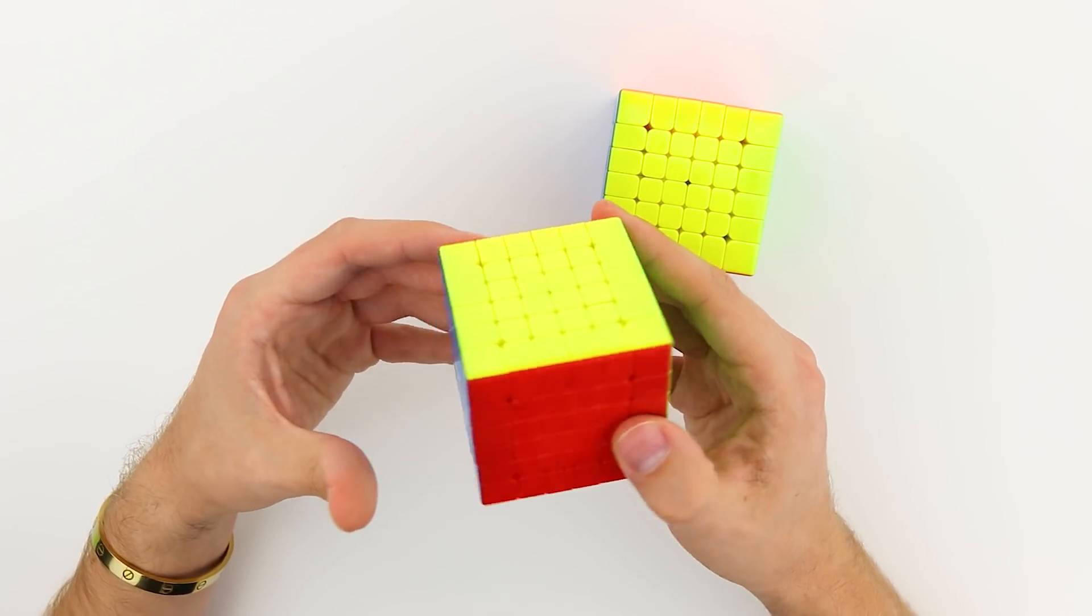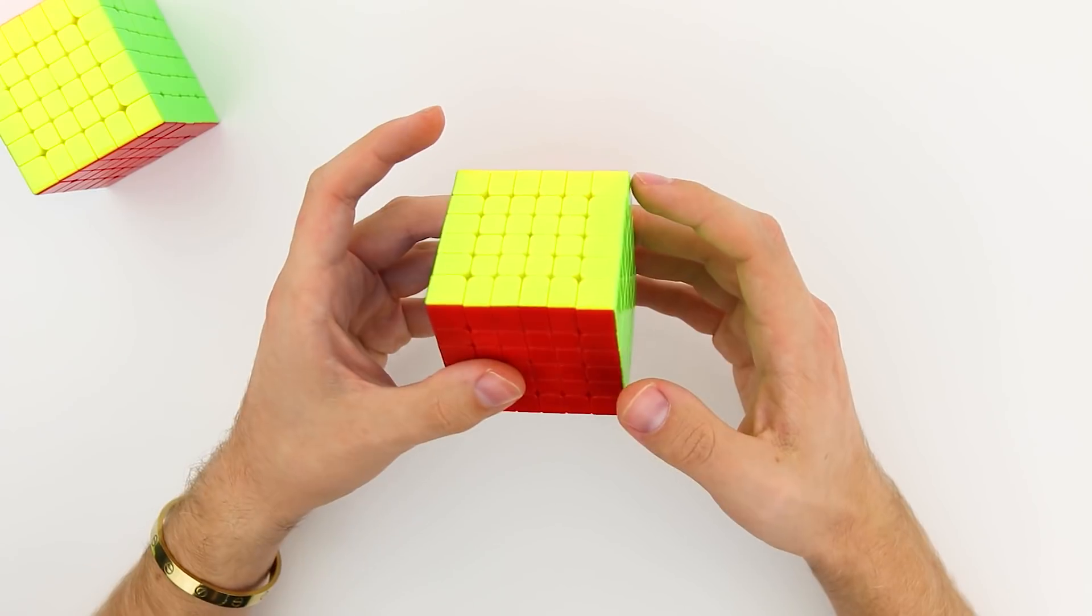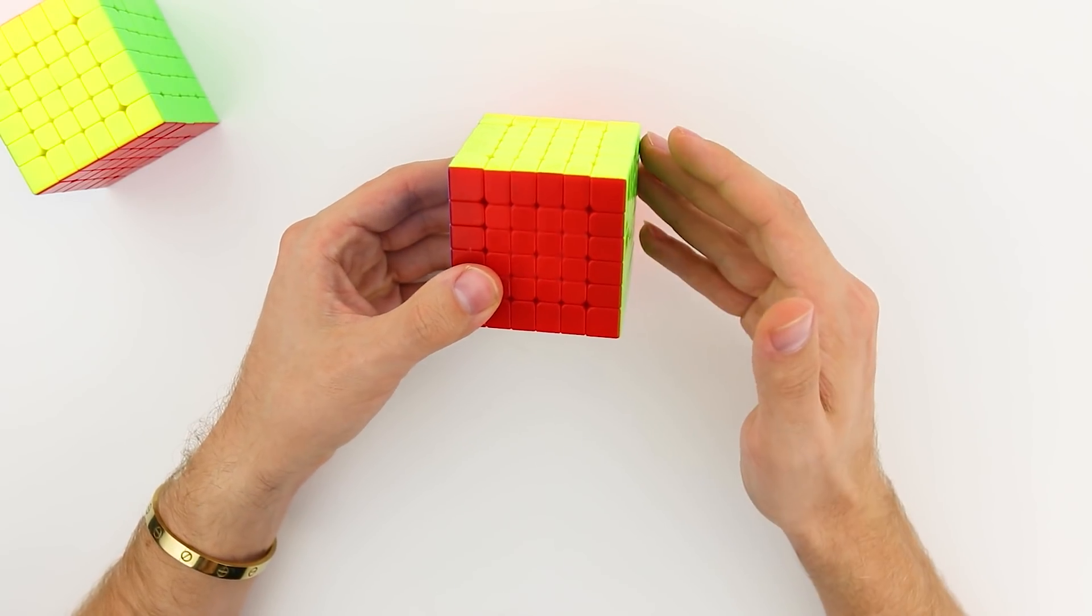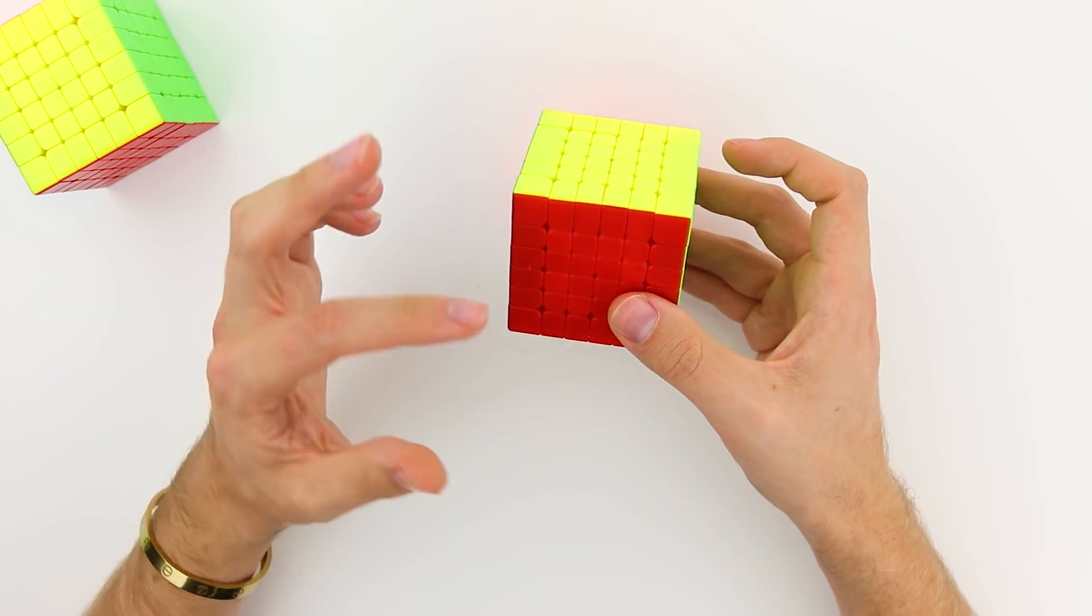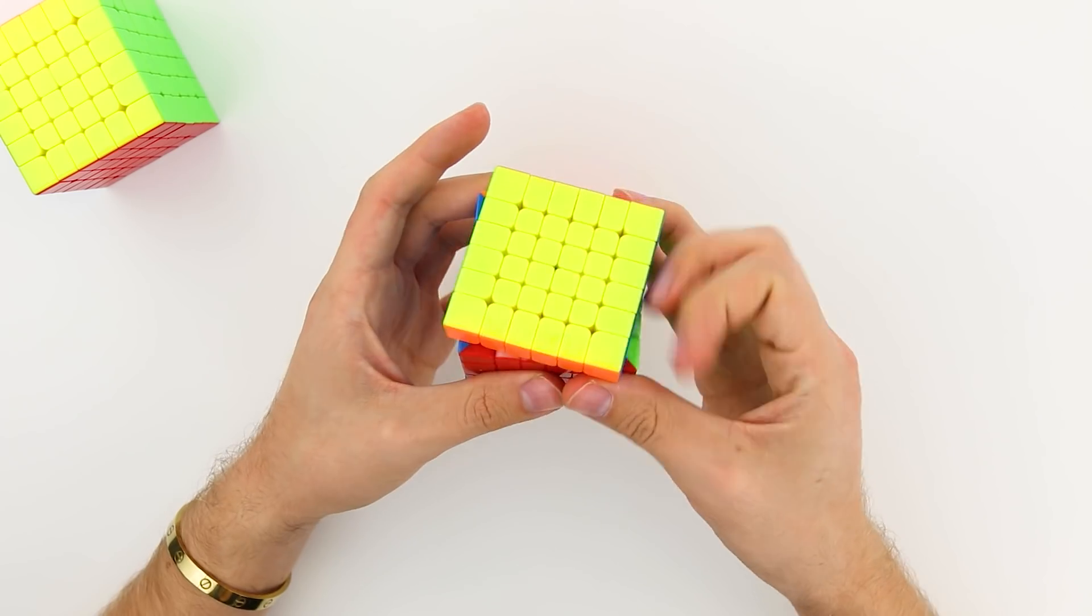The weight difference is actually where it does feel pretty different to me. You can definitely tell that this is a lighter weight puzzle, but it does feel like more of the weight is in the center, if that makes sense. So it feels like it's a lot more stable, but it's not very loose and fluid turning.